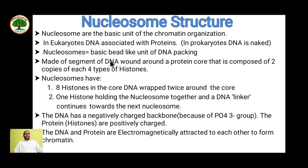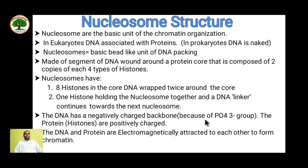The nucleosome is made of a segment of DNA wound around a protein core composed of two copies of each type of histone, forming a histone octamer. DNA is wrapped twice around it. There is a linker DNA that connects one nucleosome to the next. DNA is negatively charged due to the phosphate group, and the histone proteins are positively charged due to basic amino acids, so they are electromagnetically attracted to each other.